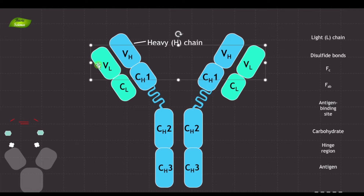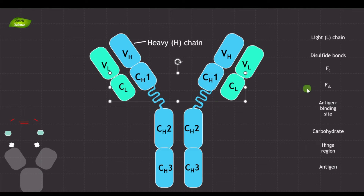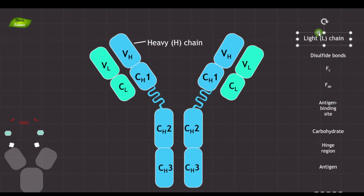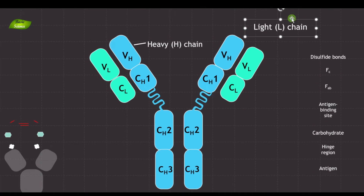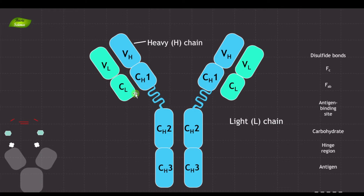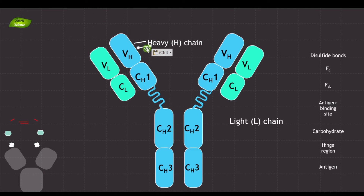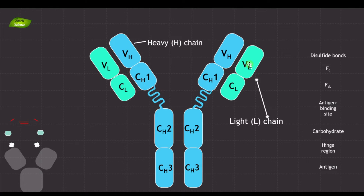These two green-colored structures are the light chains, and the blue color is the heavy chain. The light chain will also have variable as well as constant regions. So the light chain — green in color — is now labeled correctly.